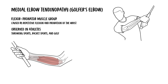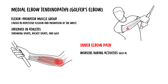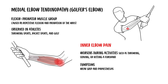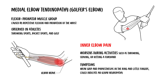Those affected by this condition often experience inner elbow pain that worsens during activities such as throwing, serving, or hitting a forehand. Symptoms may also include a weak grip and paresthesias in the ring and little finger, which could indicate an ulnar neuropathy.